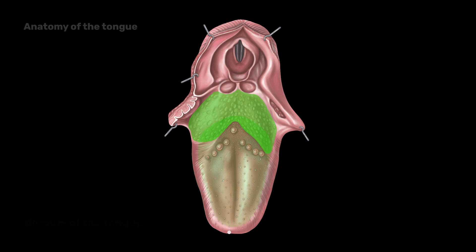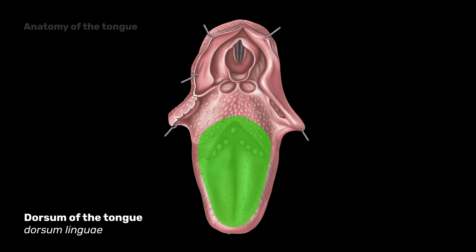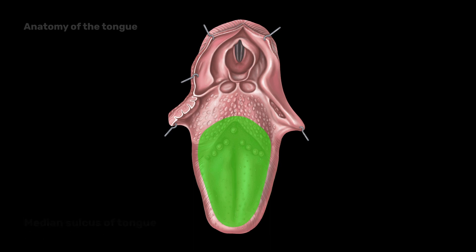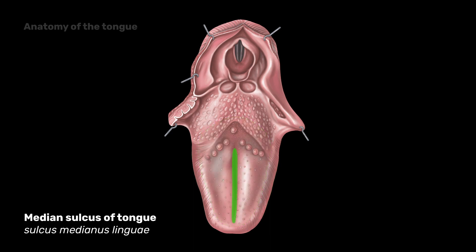The superior surface of the organ is called the dorsum of the tongue. The median sulcus runs along the median line anteroposteriorly. In the thickness of the tongue, this sulcus corresponds to a fibrous plate dividing the tongue into right and left halves.